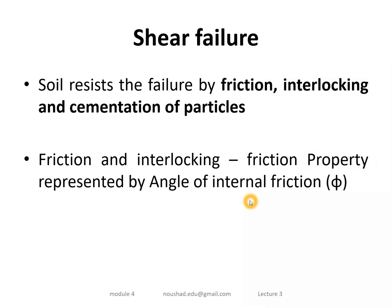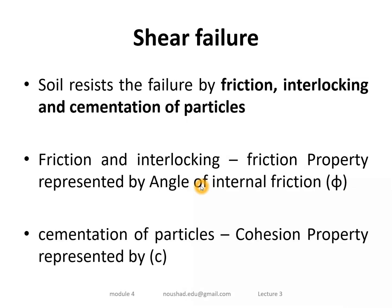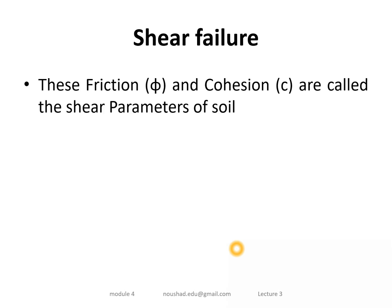Soil particle-to-particle friction is represented by an angle of friction, denoted by phi (φ). Cementation and particle-to-particle cohesion — also called particle-to-particle gluing — is called the cohesion property and it is represented by the letter c.